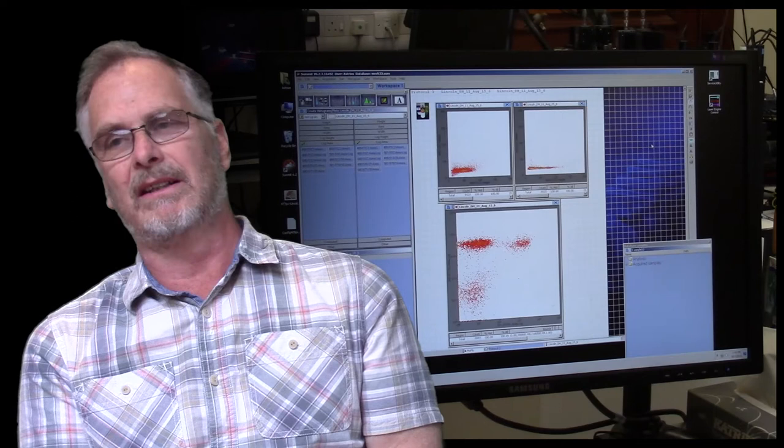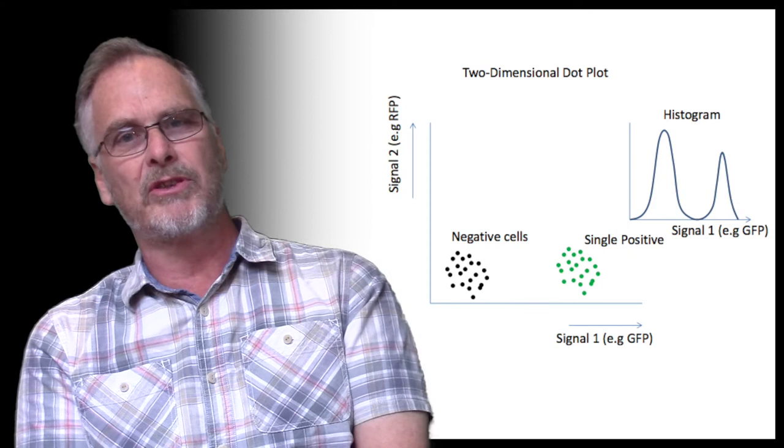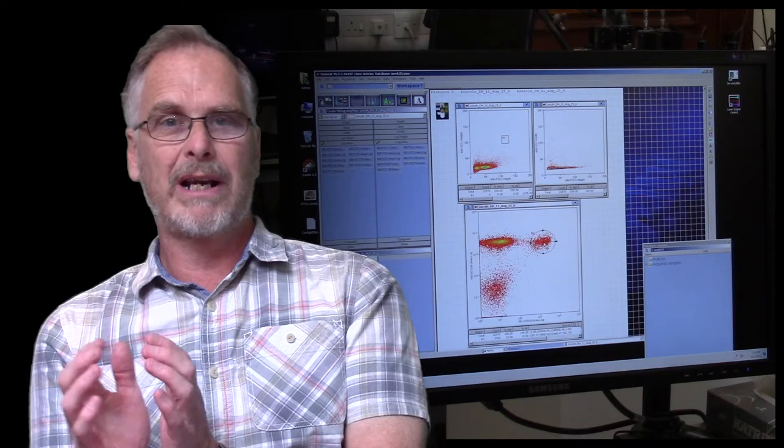Getting data from the instrument, we can display it on cytograms and histograms—two-dimensional plots and single-dimensional plots. We can use the fluorescence data to identify cells of interest by what's called backgating. We put a region around a positive fluorochrome and see where that's displayed on our forward scatter and side scatter to isolate the cells of interest.